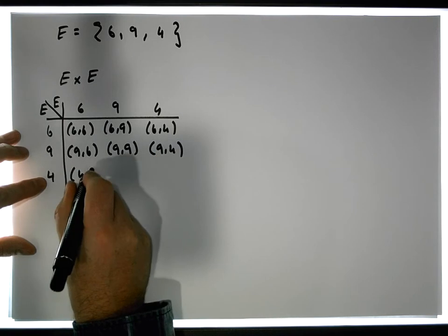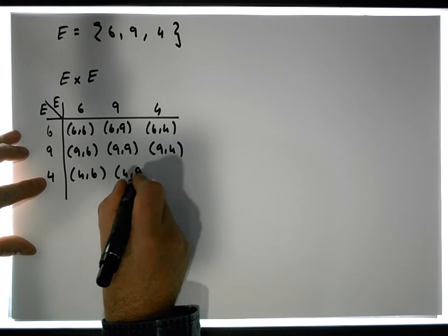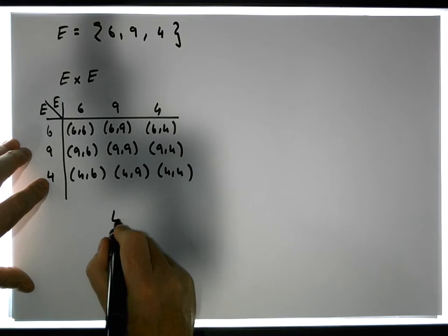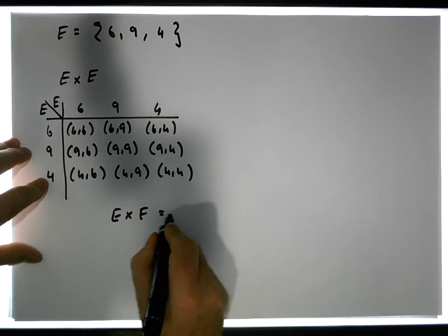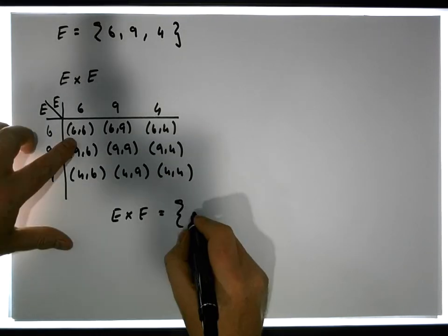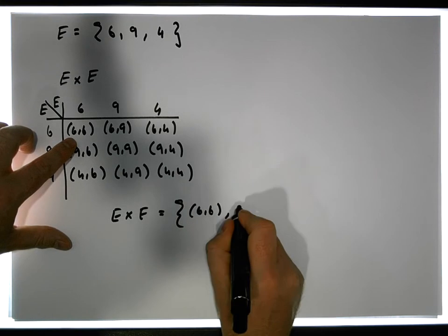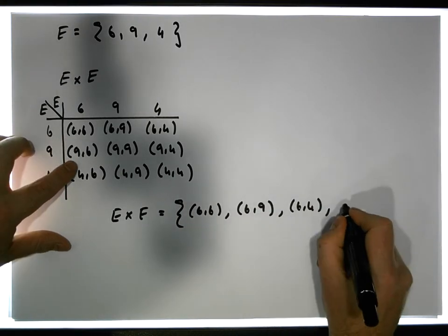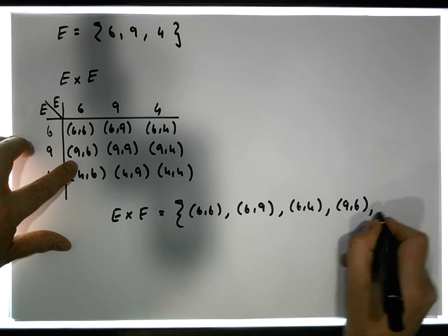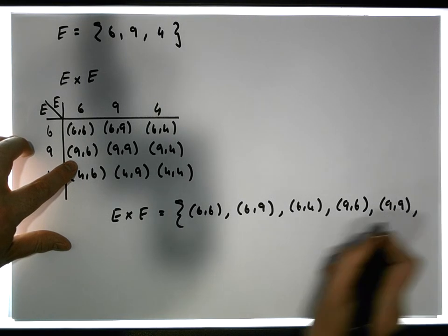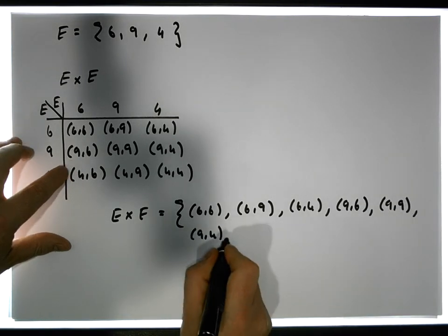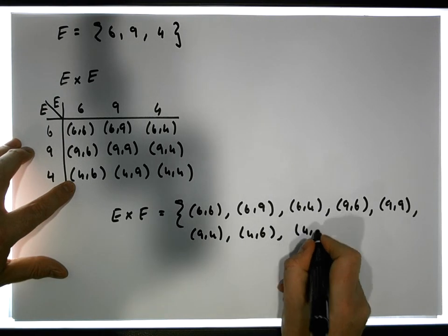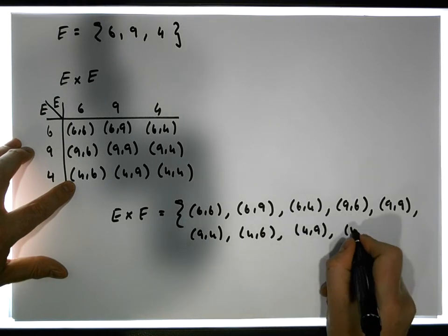We have 4 with 6, and we have 4 with 9, and we have 4 with 4. So the cross product E cross E is simply the set that contains these ordered pairs. So it contains 6,6, it contains 6,9, it contains 6,4, it contains 9,6, it contains 9,9, it contains 9,4, it contains 4,6, it contains 4,9, it contains 4,4.